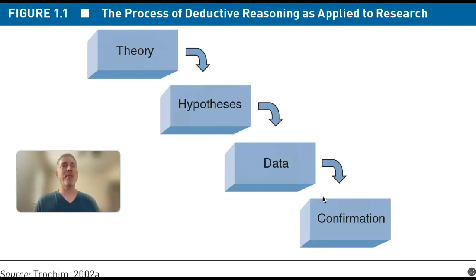Imagine if you have the hypothesis that there are no black swans. And you say all swans are white. And then you collect data and you find white swans. They support your hypothesis that all swans are white.